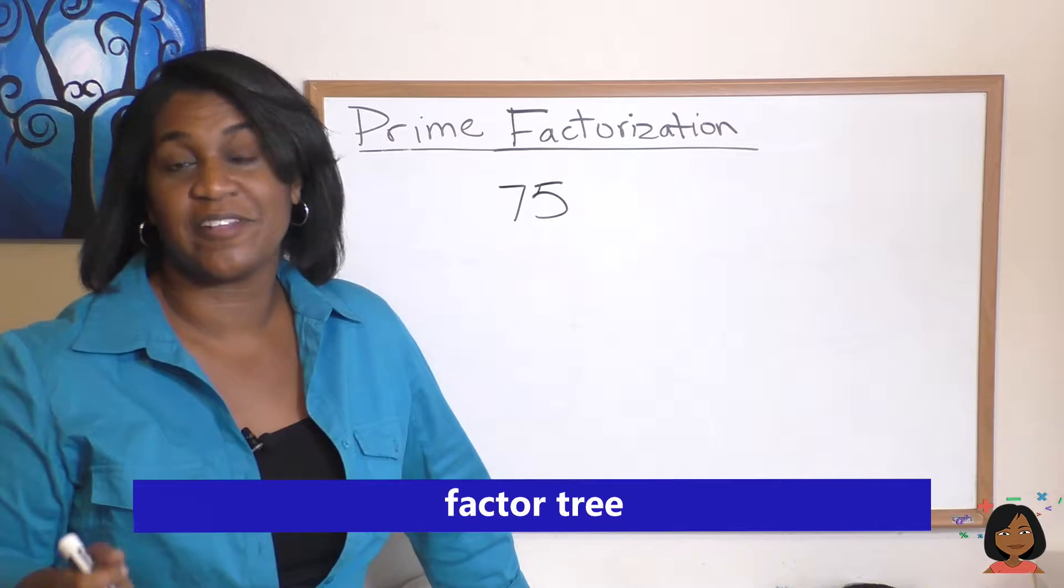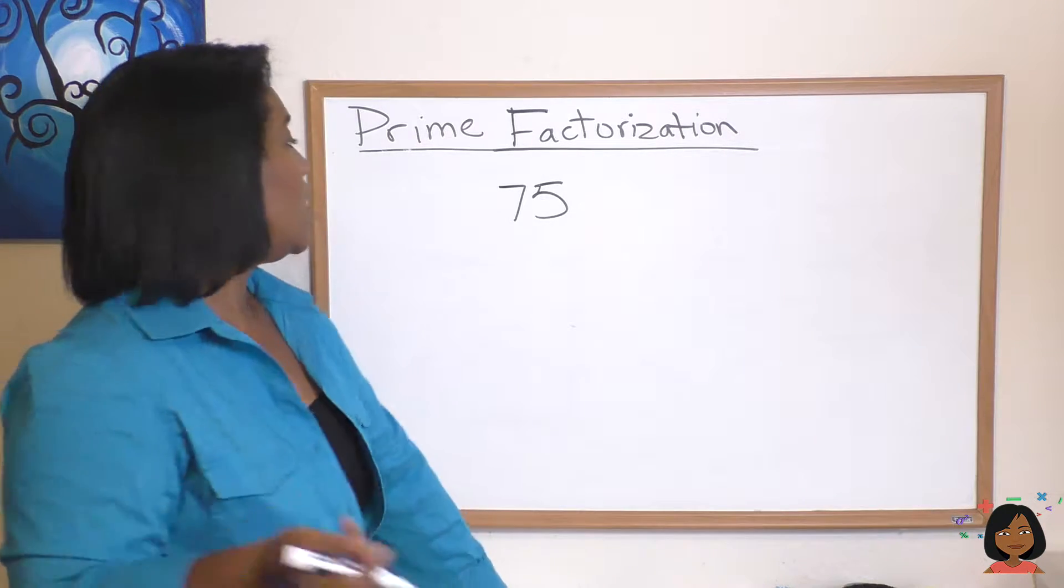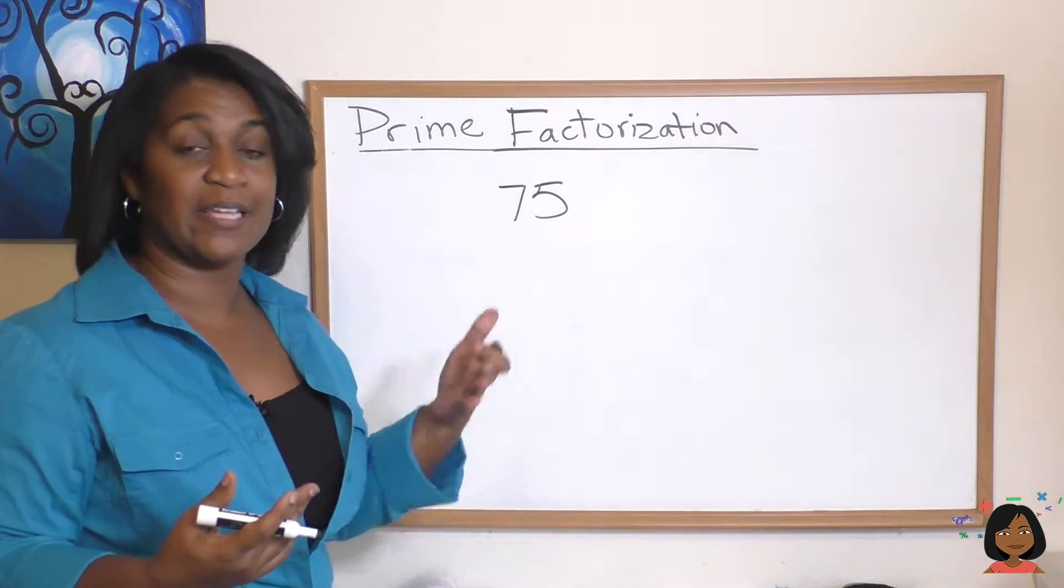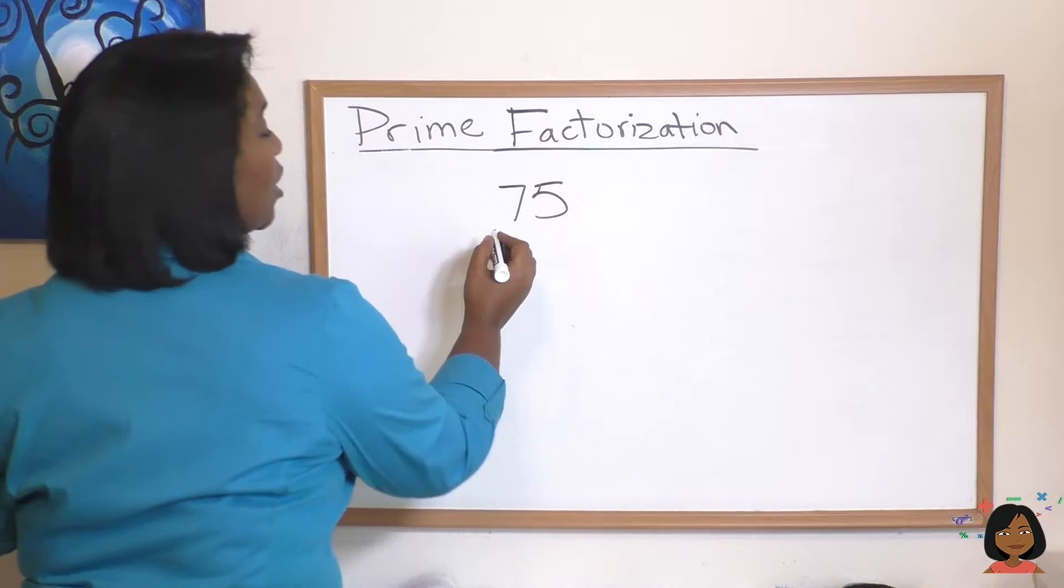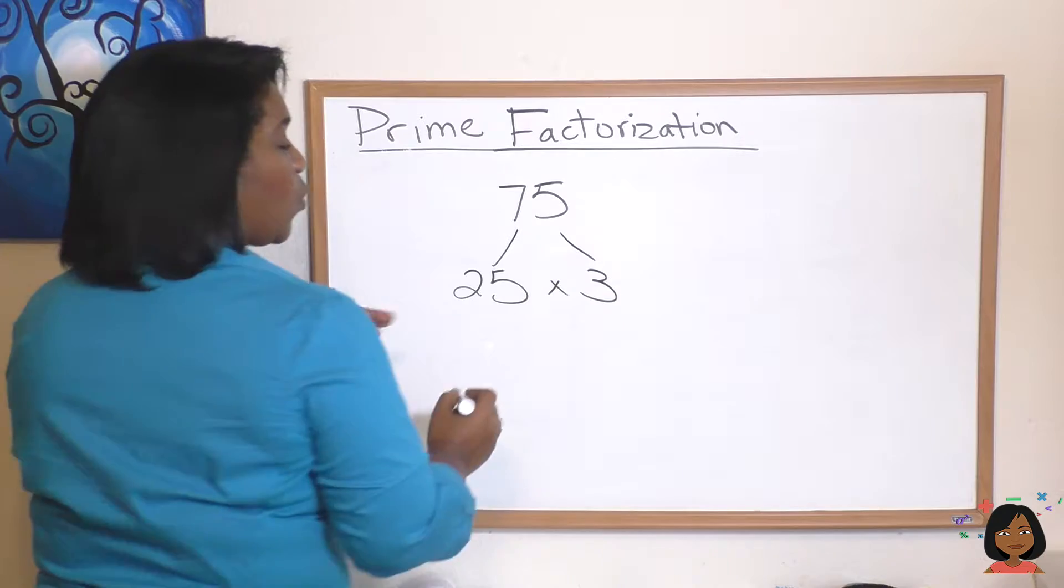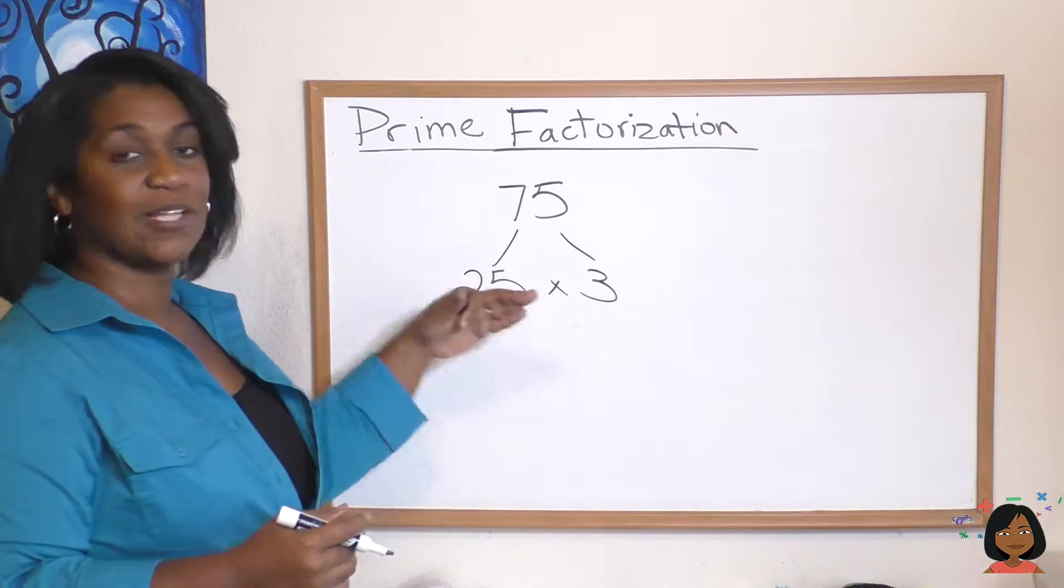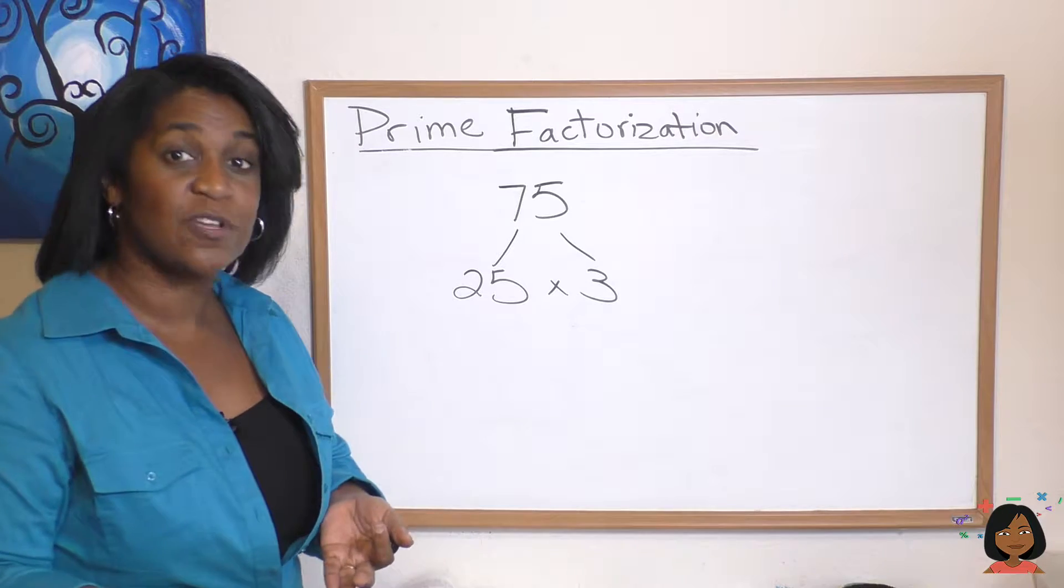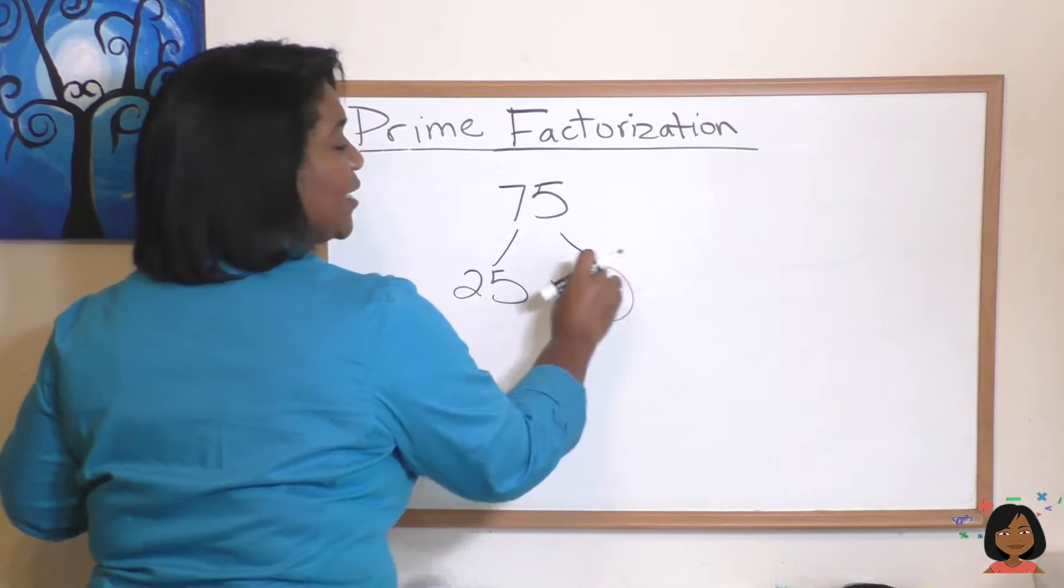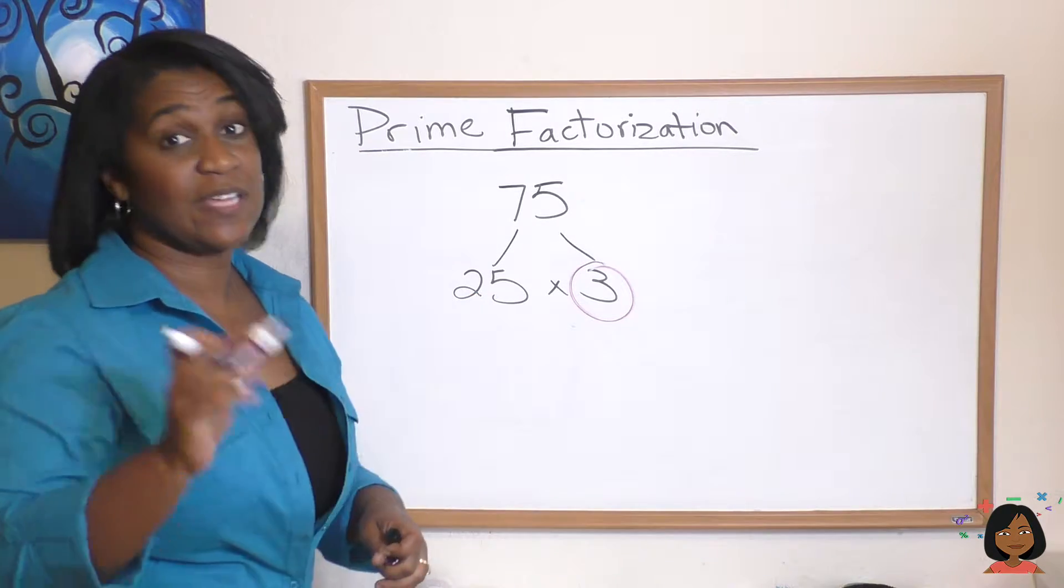I have a number here 75 and we're going to look for the prime factors that make up 75, and you just start with numbers that you know when multiplied together equal 75. So I'm going to start with the number 25 and 3. 25 times 3 is 75. Now I stop and take a look and say are any of these numbers prime? We do have a prime number. The number 3 is prime. So I don't have to deal with this number anymore. But 25 is not prime.